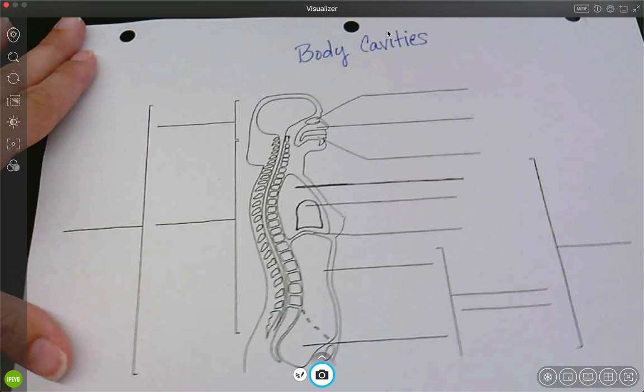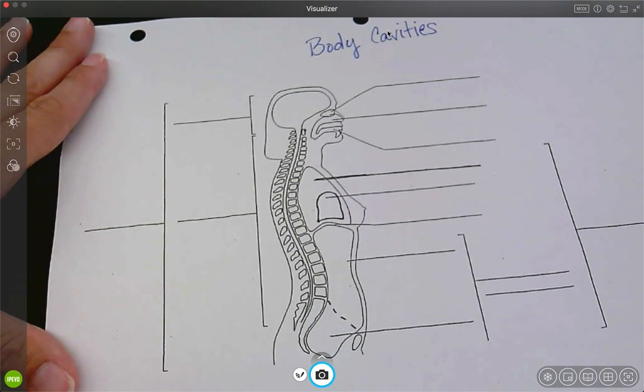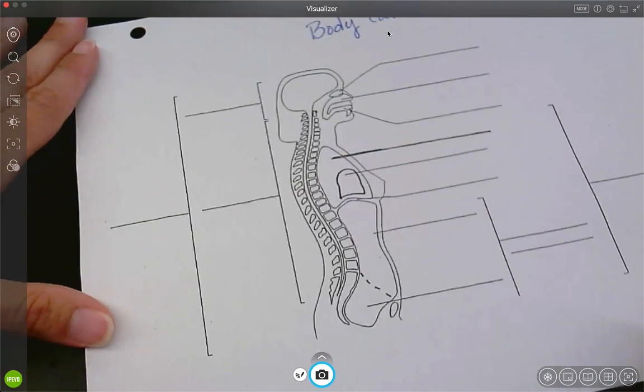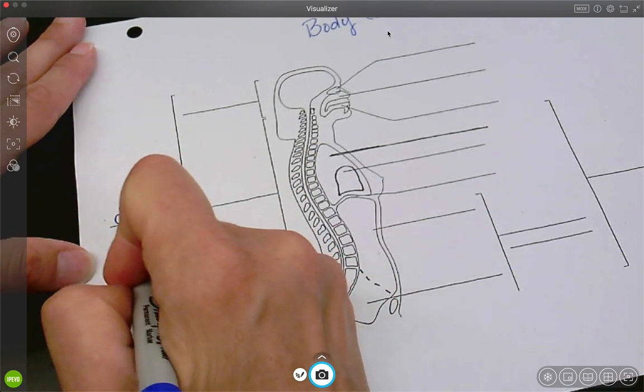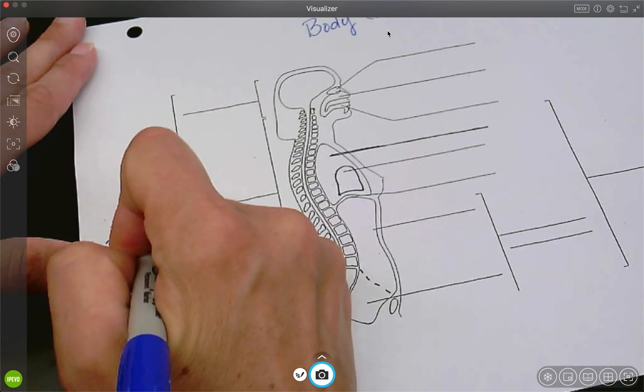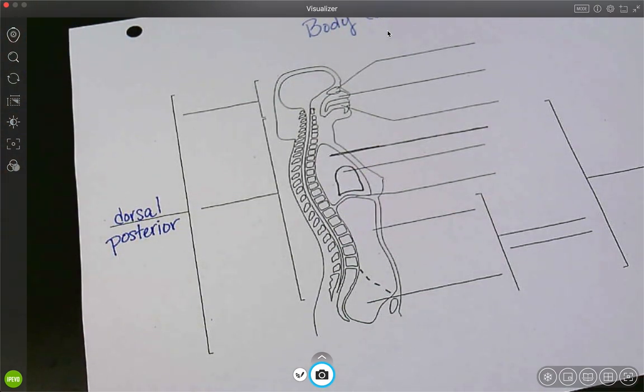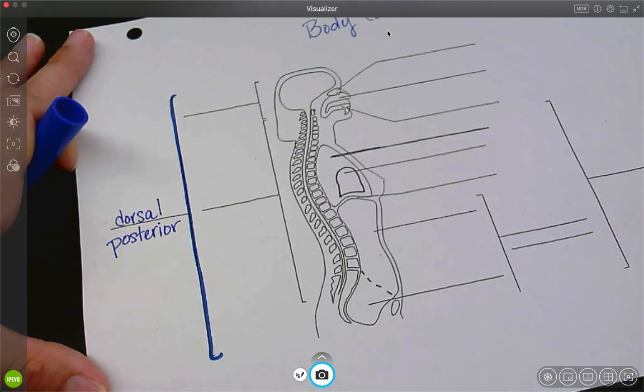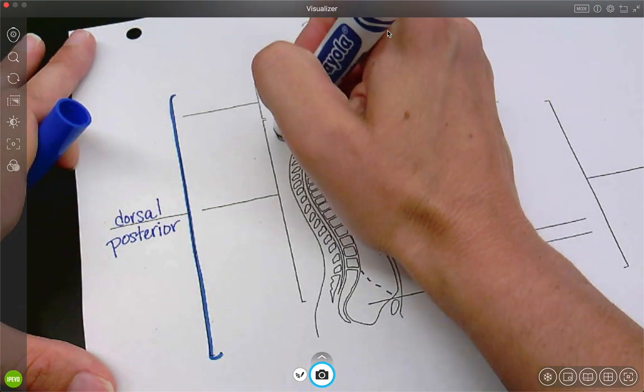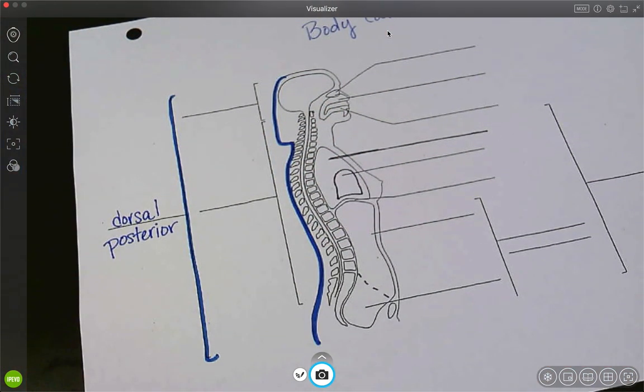All right. So we are going to fill in the body cavities and then we are also going to fill in the organs located within those cavities. So we are going to start at the back. The back of the body is called dorsal or posterior, and so when we're looking at this, we're looking at this big bracket and it is the whole back of the body that is dorsal or posterior.